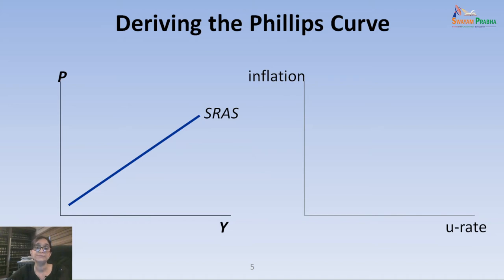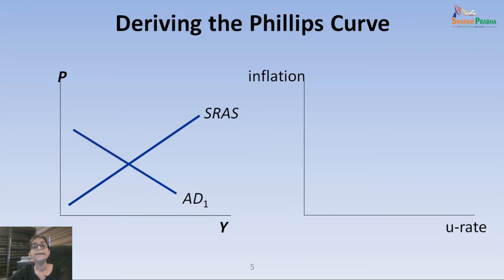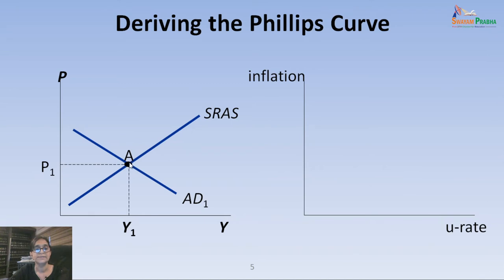The Phillips Curve can be derived using the aggregate demand and aggregate supply model. The first panel gives the price and output relationship, showing a short-run aggregate supply curve sloping upwards and an aggregate demand curve sloping downwards. Where AD1 intersects the short-run aggregate supply curve SRAS, we get the equilibrium price P1 and equilibrium output Y1 — they meet at point A.